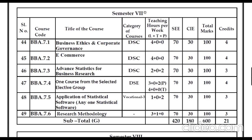In the seventh semester you will have three core subjects: Business Ethics and Corporate Governance, E-Commerce, and Advanced Statistics for Business Research. You will also have one discipline elective paper — one course from your selected elective group. The occasional paper is Application of Statistics Software and Research Methodology.